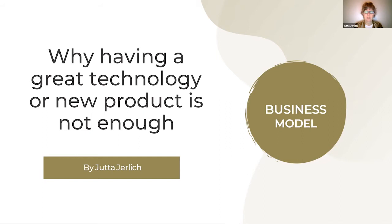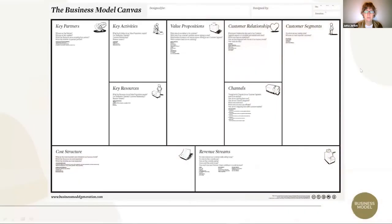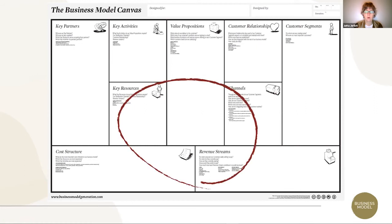Hello, we have reached the stop business model and we are talking today about why having a great technology or new product is not enough anymore. Here is our orientation map that we have used since the beginning, and we have reached now that core where all the lines, all the pieces of the puzzle are coming together, where you're actually trying to create that engine that is driving your business.